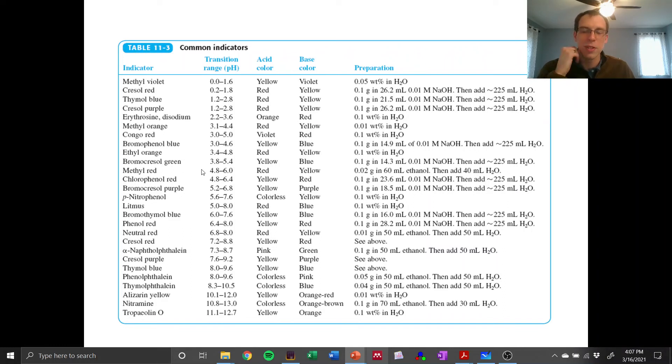So like bromocresol green, which we use in the lab, the green color is where you have both the yellow and blue that are present. If you go too far, you'll have just blue. If you don't go far enough, you'll have just yellow.